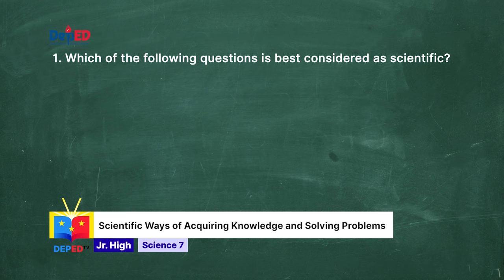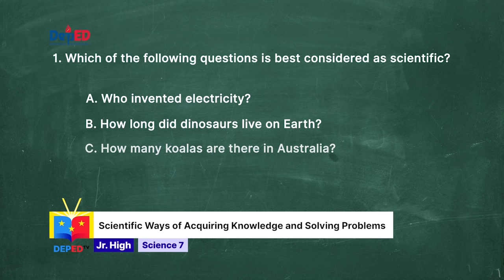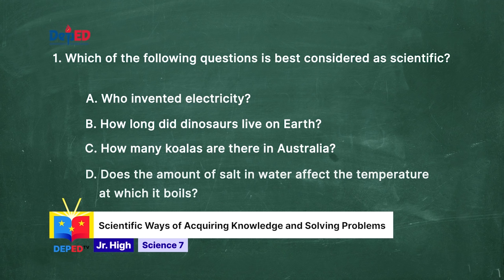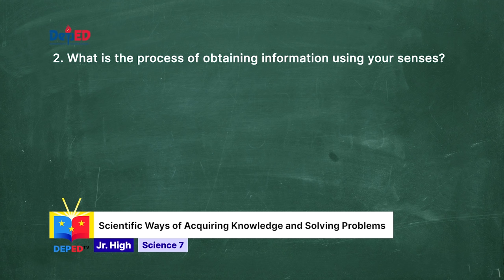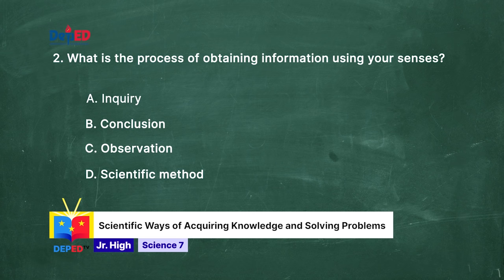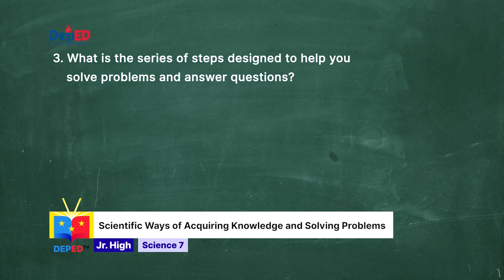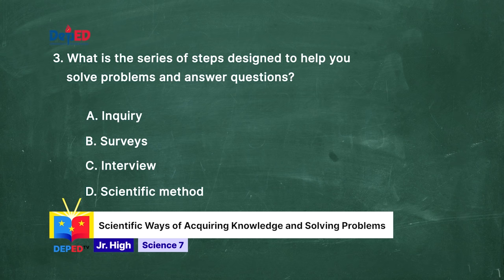Number 1. Which of the following questions is best considered as scientific? How long did dinosaurs live on Earth? How many koalas are there in Australia? Does the amount of salt in water affect the temperature at which it boils? Number 2. What is the process of obtaining information using your senses? Number 3. What is the series of steps designed to help you solve problems and answer questions? A. Inquiry. B. Surveys. C. Interview. D. Scientific method.